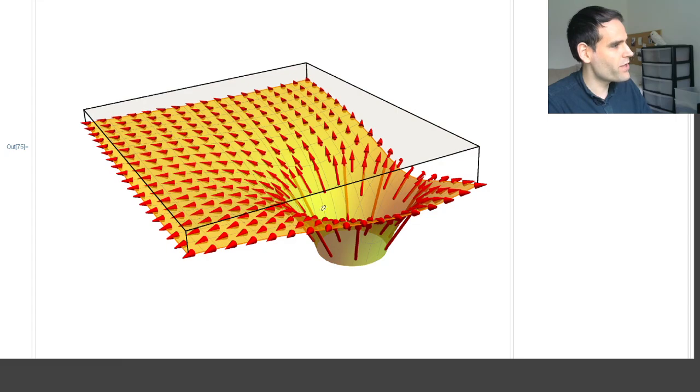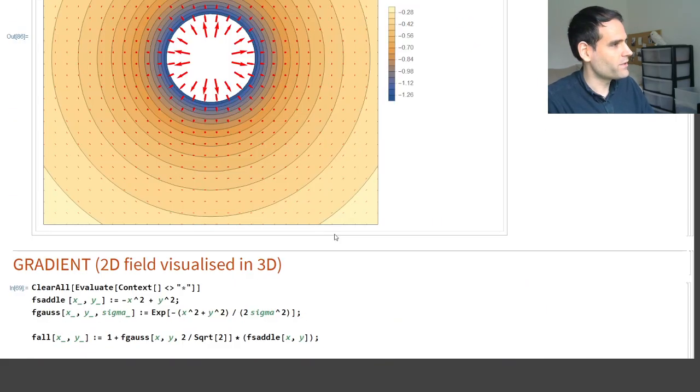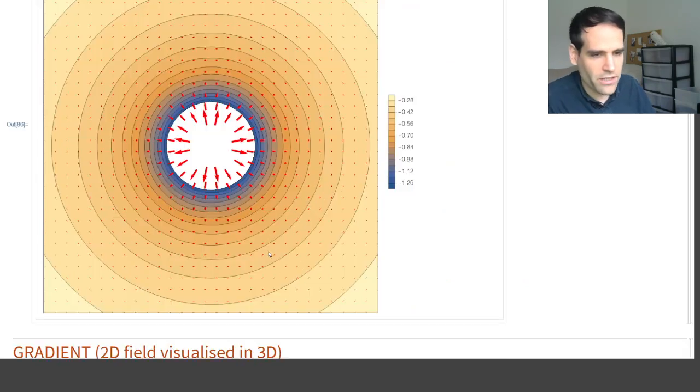If you want to look at this in two dimensions, removing the third dimension representing height, we can go here. Here we have the gravitational potential represented using colors, and you can see the equipotential lines which are circles.